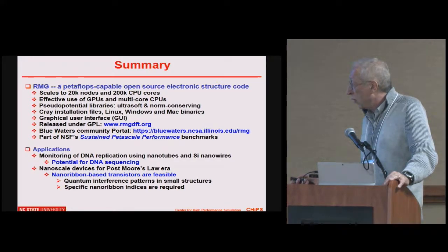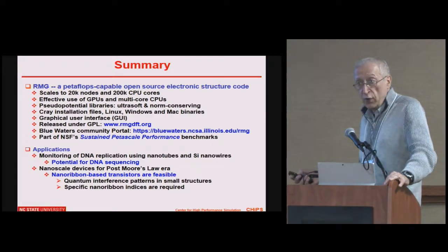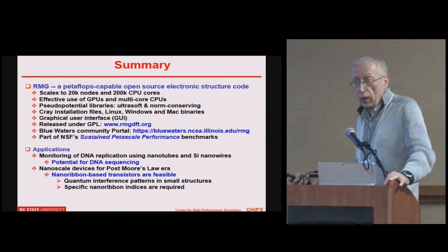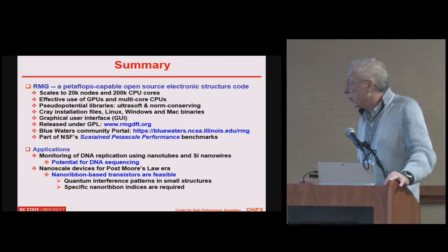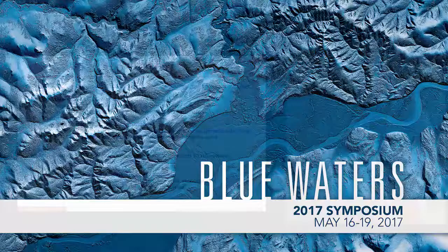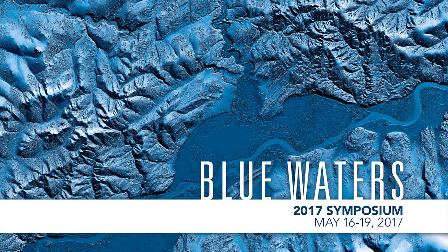We also talked about nanoscale devices for the post-Moore's law era. Nanoribbon-based transistors are feasible. There is a program on atomically precise electronics which we are part of. Thank you very much for your attention — I'd be happy to answer questions.